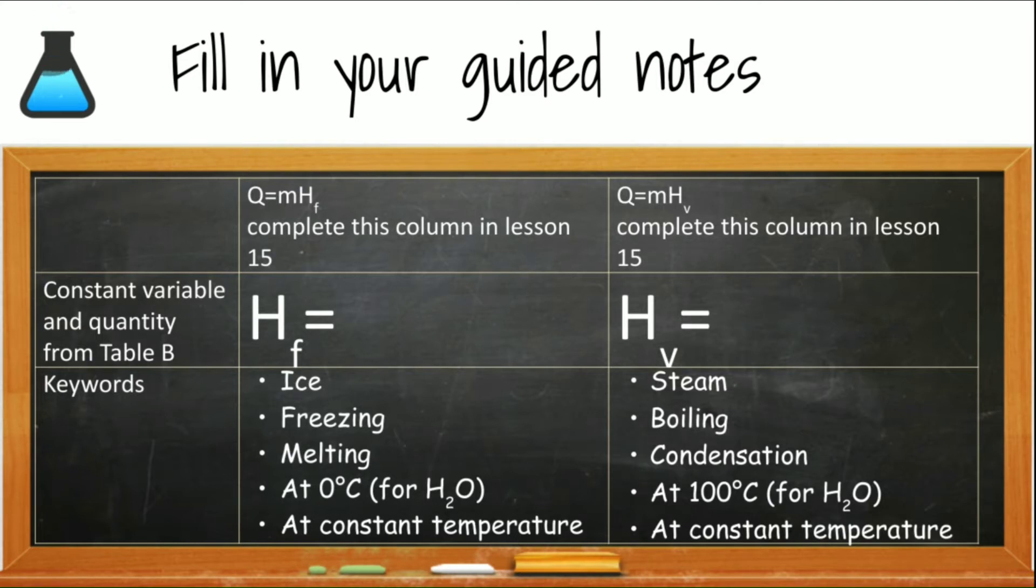So when we use the heat of fusion equation, we know that we're going to get the heat of fusion from the Regents Chemistry Reference Table B. Take a minute to flip your reference table over to the front and see and record down in your notes what the heat of fusion for water is. When we look for keywords in a word problem, you will know that you should use the heat of fusion equation when you see things like ice, freezing, melting at zero degrees Celsius. Now, that would be for water, but almost all of our calculations will be for water or if you see at constant temperature.